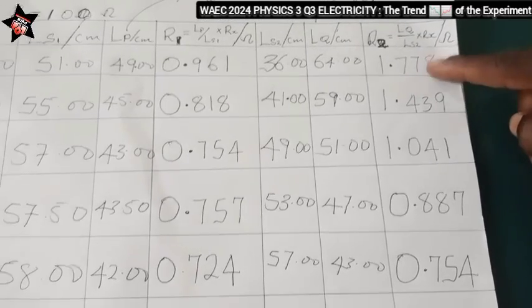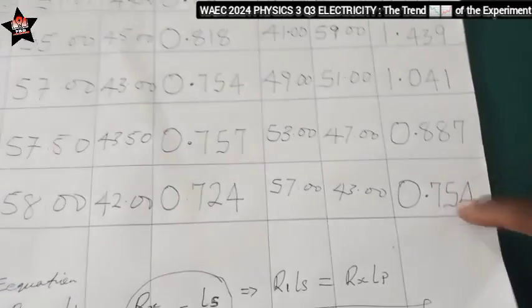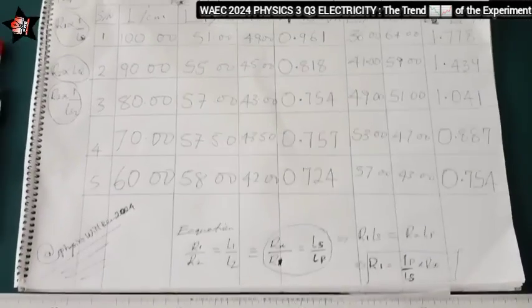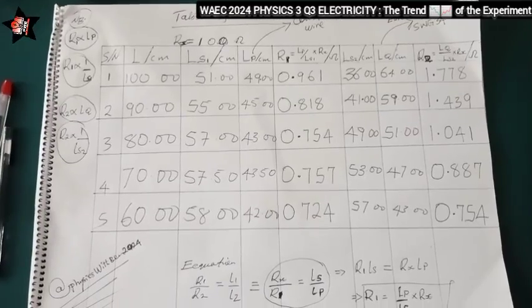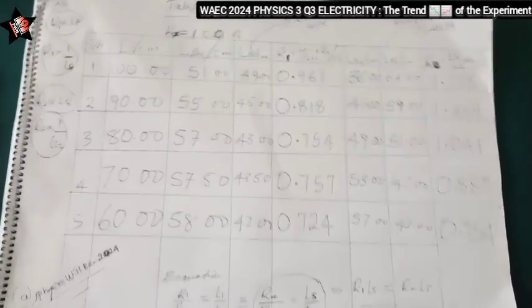Good, from 1.778 to 1.7, this is decreasing. So the table of value is perfect. So if you are running this experiment and your table of value is not like this, then what you are doing is totally wrong.